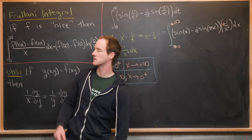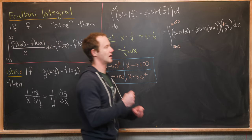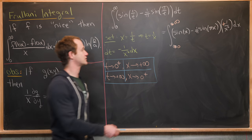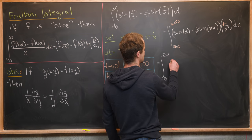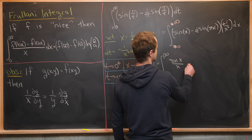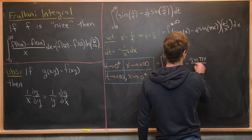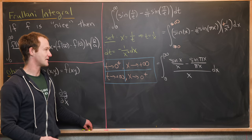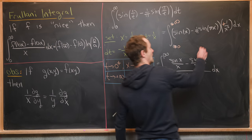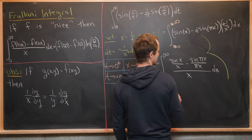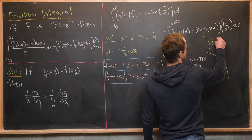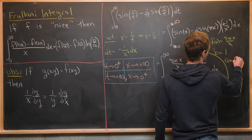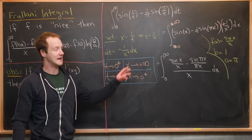Next, we split the 1/x² into two pieces, saving one to play the role of the 1/x in the Frullani form. We rewrite the integral from 0 to infinity of [sin(x)/x minus sin(πx)/(πx)] all over x, dx. Now we see the integral is in the correct form. Our function f(x) = sin(x)/x, our number b = 1, and our number a = π.